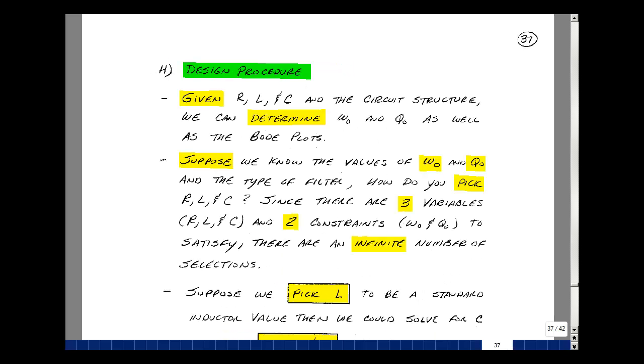Let's develop a design procedure for picking the R, L, and C for any of our filters. Now given the values of R, L, and C in an existing circuit, you could figure out the value of omega naught and Q naught, as well as the Bode plots for all four second order filters. Suppose that we know the specifications of the filter. In other words, what is omega naught and Q naught, given that H naught is equal to 1? Well, I have three components. I only have two constraints, omega naught and Q naught, because H naught is equal to 1. So there's an infinite number of possibilities for selecting the R, L, and C, given these conditions.